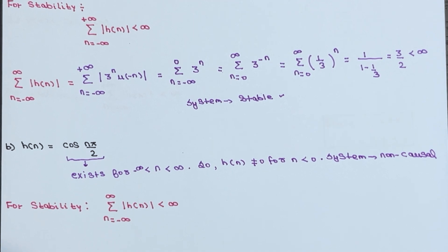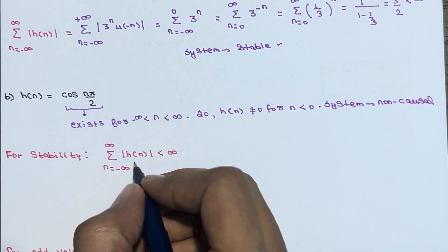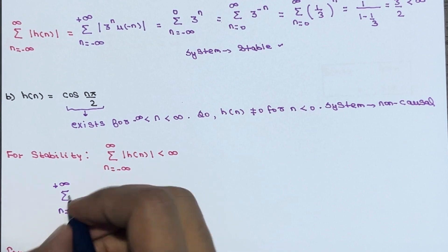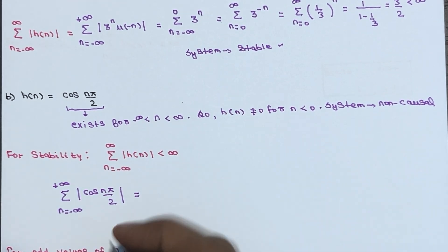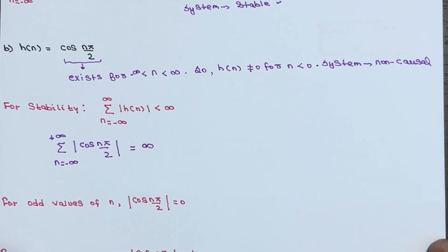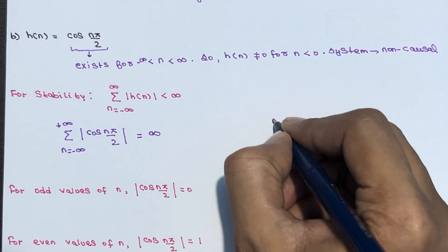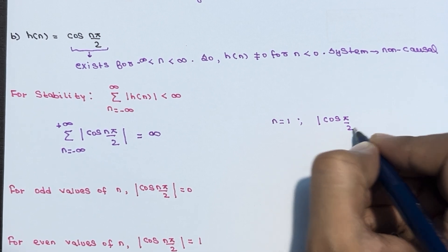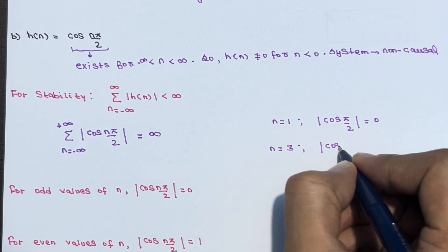Now let's check stability. We evaluate: summation from n = minus infinity to plus infinity of |cos(nπ/2)|. For odd values of n — for example, n = 1 gives cos(π/2) = 0, and n = 3 gives cos(3π/2) = 0 — so for all odd values of n, |cos(nπ/2)| equals 0.